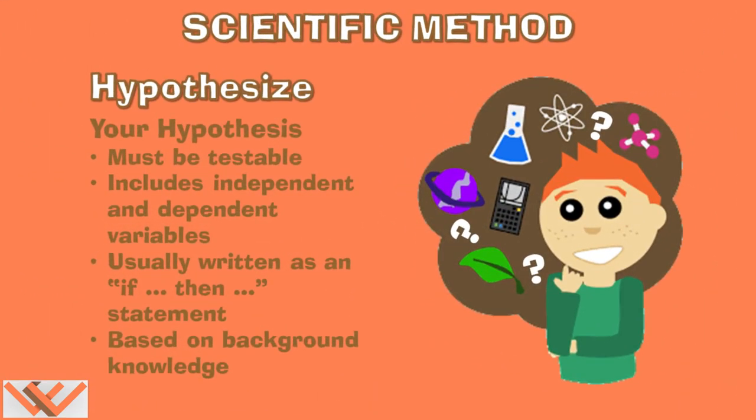Step three is make a hypothesis. Your hypothesis is an educated guess or simple explanation made as a starting point for further investigation or experimentation. It must be testable, which means that can it be supported or rejected based on the outcomes of your experiment. Your hypothesis must include the independent and dependent variables. What is an independent variable? An independent variable is the part of your experiment that you want to test. A dependent variable is the outcome that occurs in your experiment in a response to the changing independent variable. And then usually a hypothesis, although not always, it is written as an if-then statement. Finally, it's based on existing knowledge. That's where the background research comes in. You see how everything's tying together?